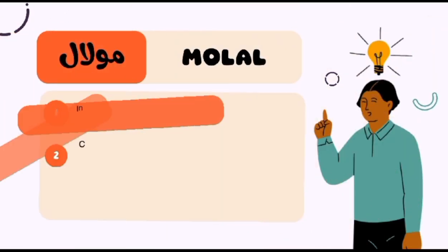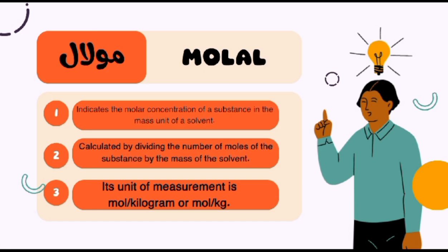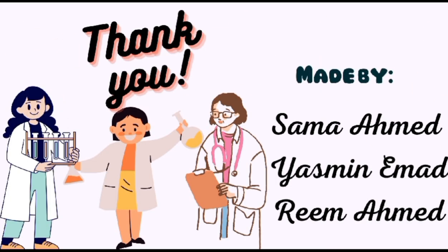Molal. The term molal indicates the molal concentration of a substance in the mass unit of a solvent. Molal concentration is calculated by dividing the number of moles of the substance by the mass of the solvent. Its unit of measurement is mol/kg.